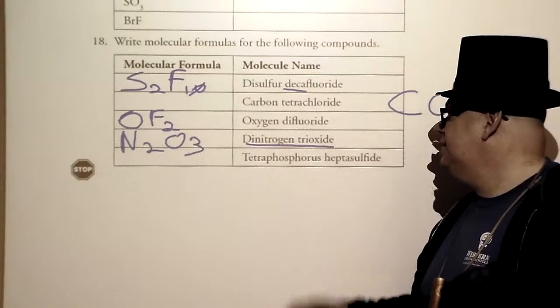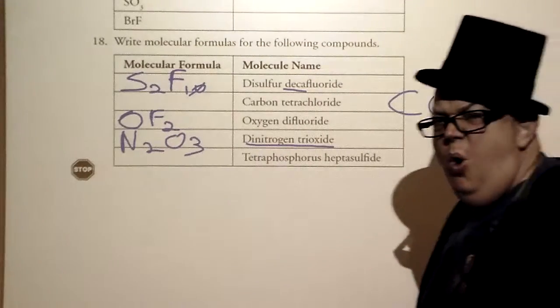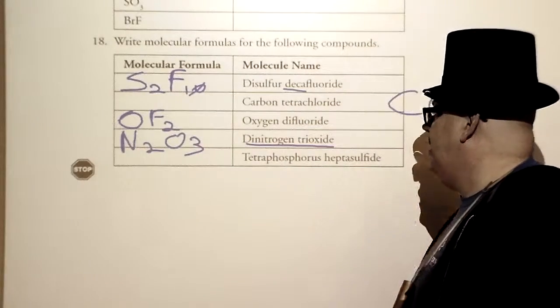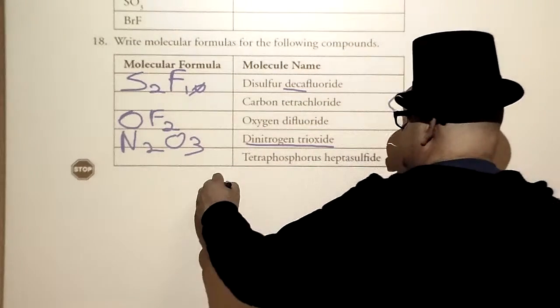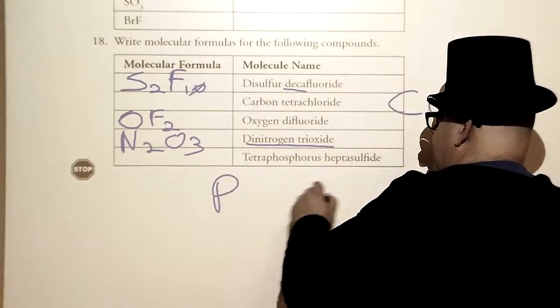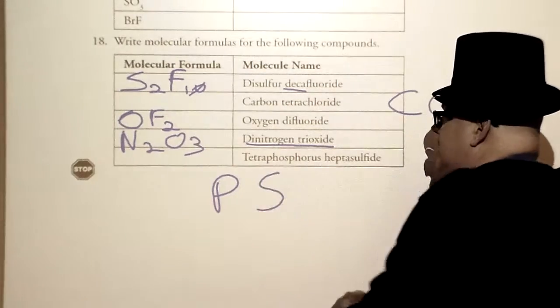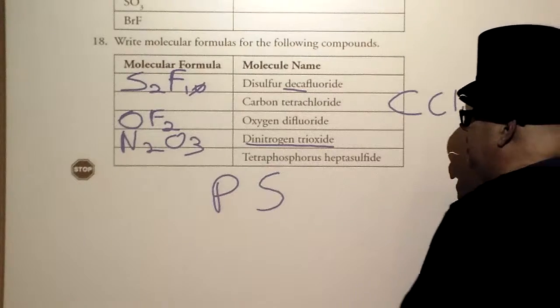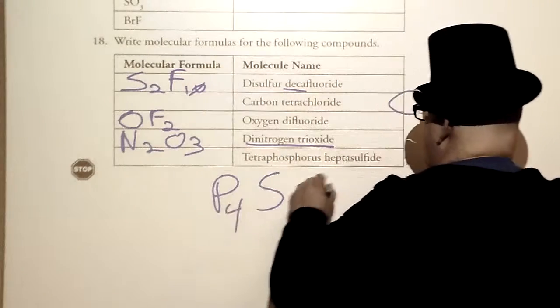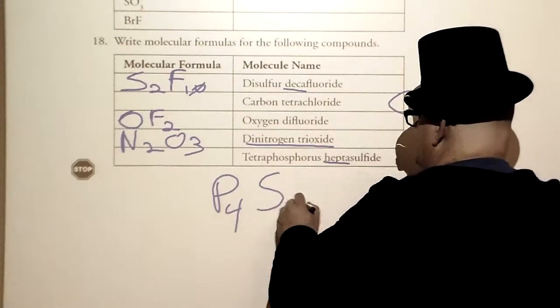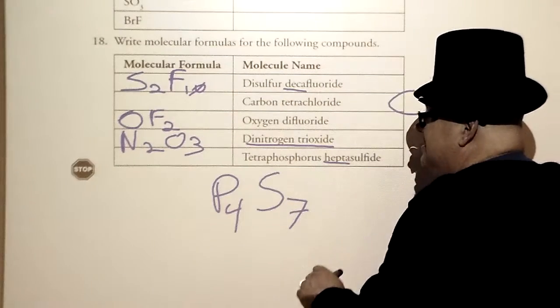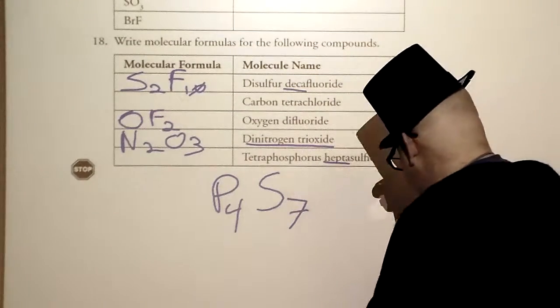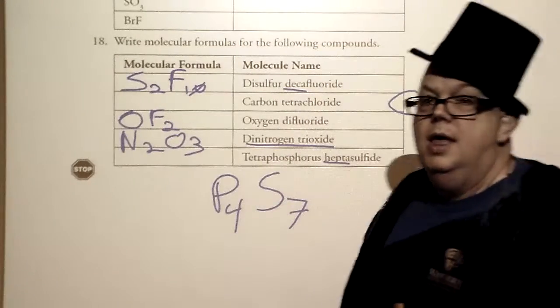Tetraphosphorus heptasulfide. Ooh. Tetraphosphorus. Well, I know it's a phosphorus. And there's a P and an S in there. Again, they're non-metals. So tetra meaning 4. So P4. Hepta meaning 7. So P4S7. That's tetraphosphorus heptasulfide.